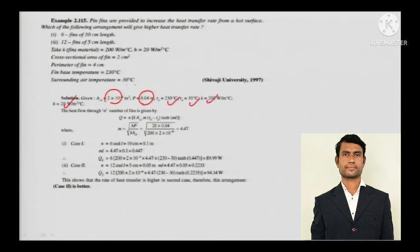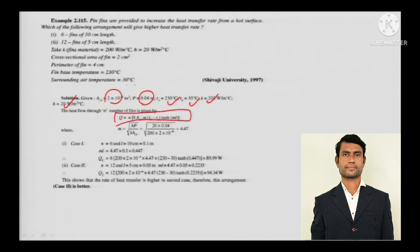Everything is given — area, perimeter, T₀, T_A, K, and H. The number of fins is given this time, and you need to calculate Q. The formula is Q = N × √(HPKA) × θ₀ × tanh(mL). For Case 1, put N = 6 and calculate Q. For Case 2, put N = 12 and calculate Q.